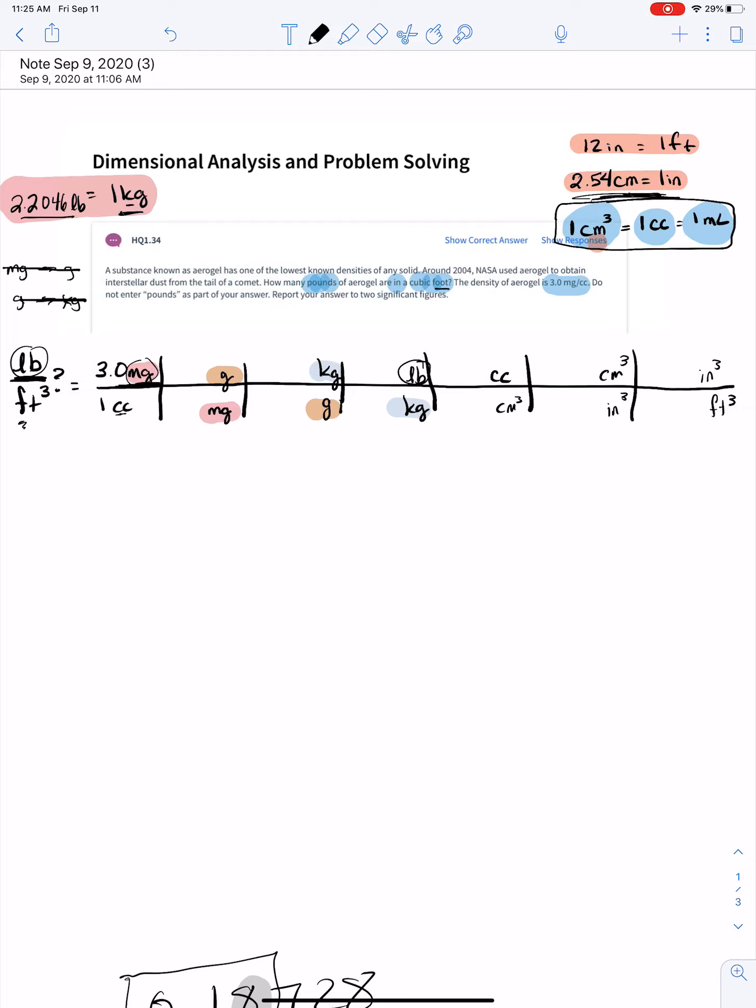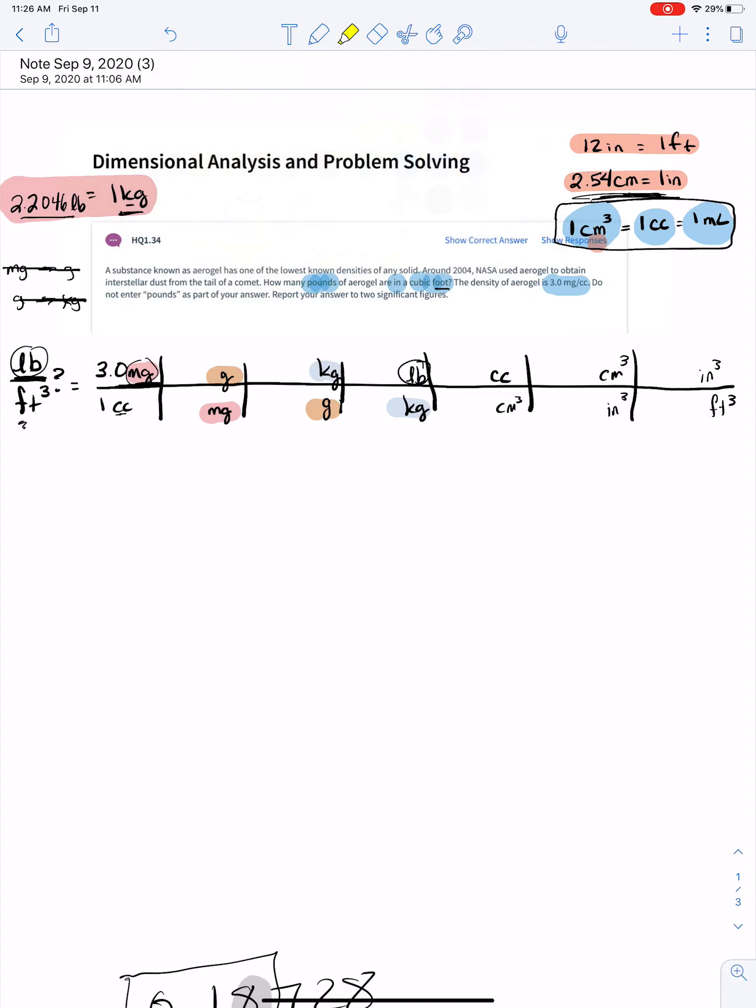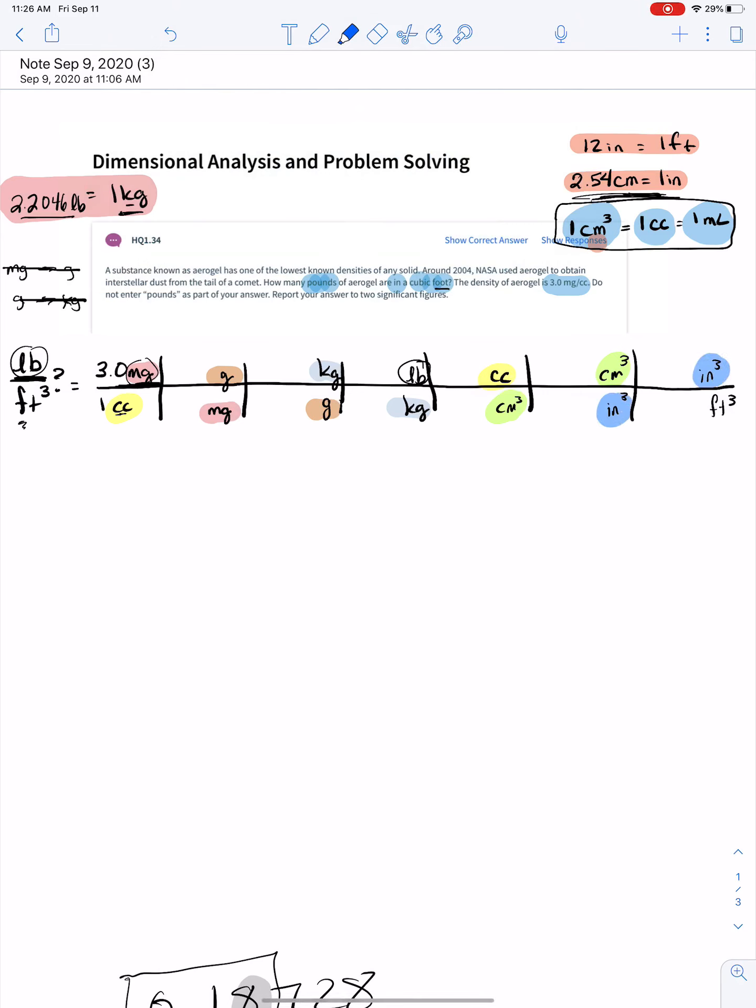I'm going to show you how to put the numbers in so that you get this relationship. It's still this relationship. You're going to do something to the relationship to make it a cube unit. Just as a note, cc, cc cancels. Cm, cm cancels. In, in cancels.